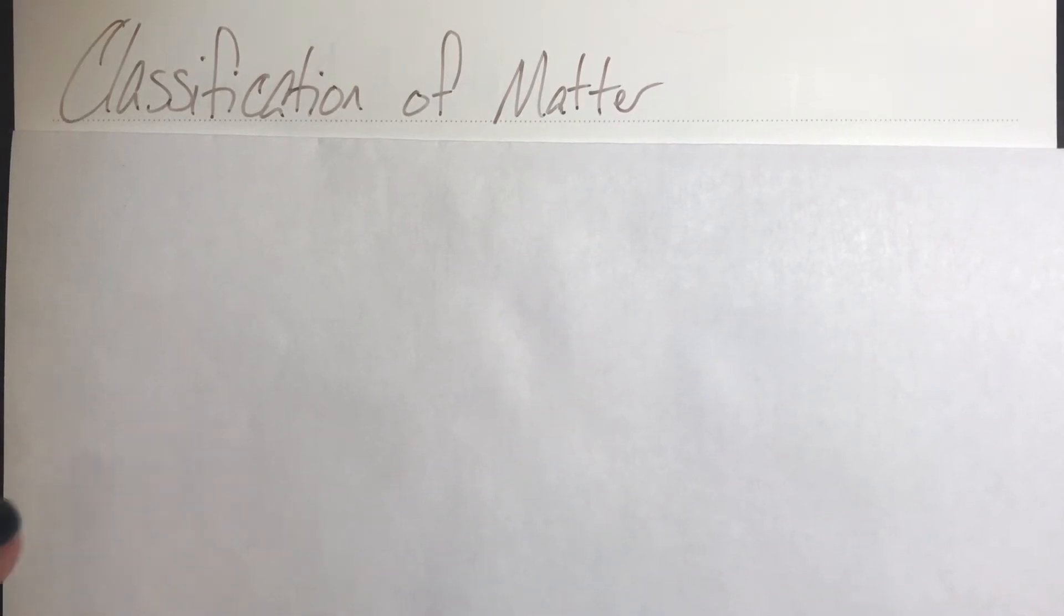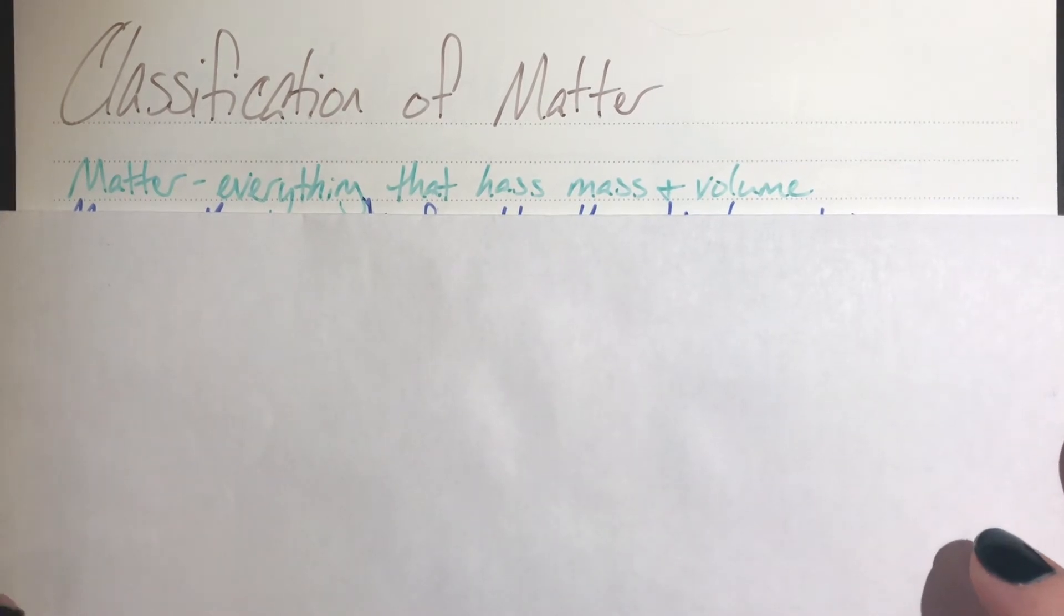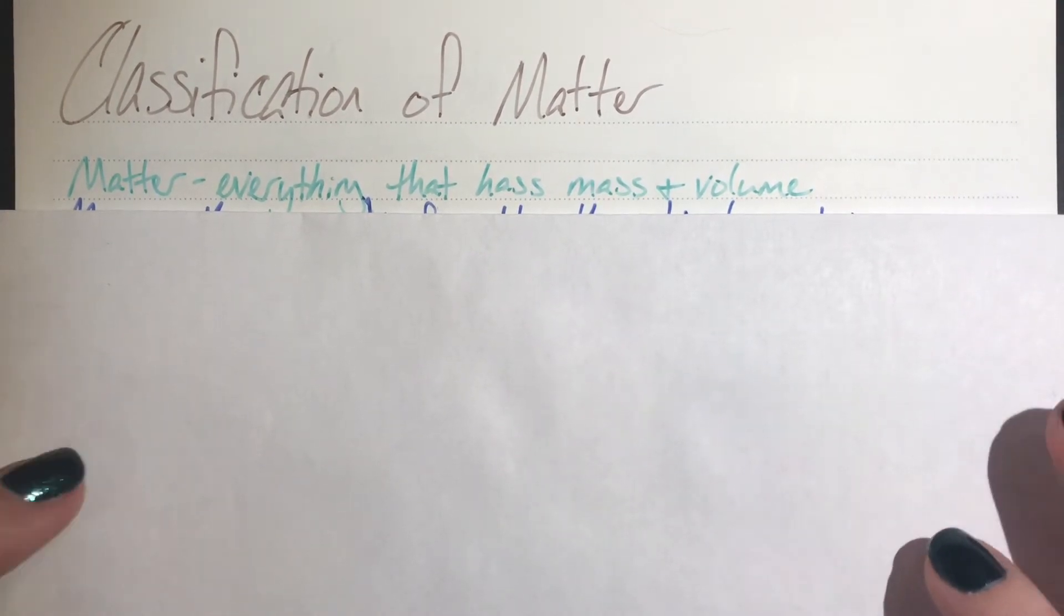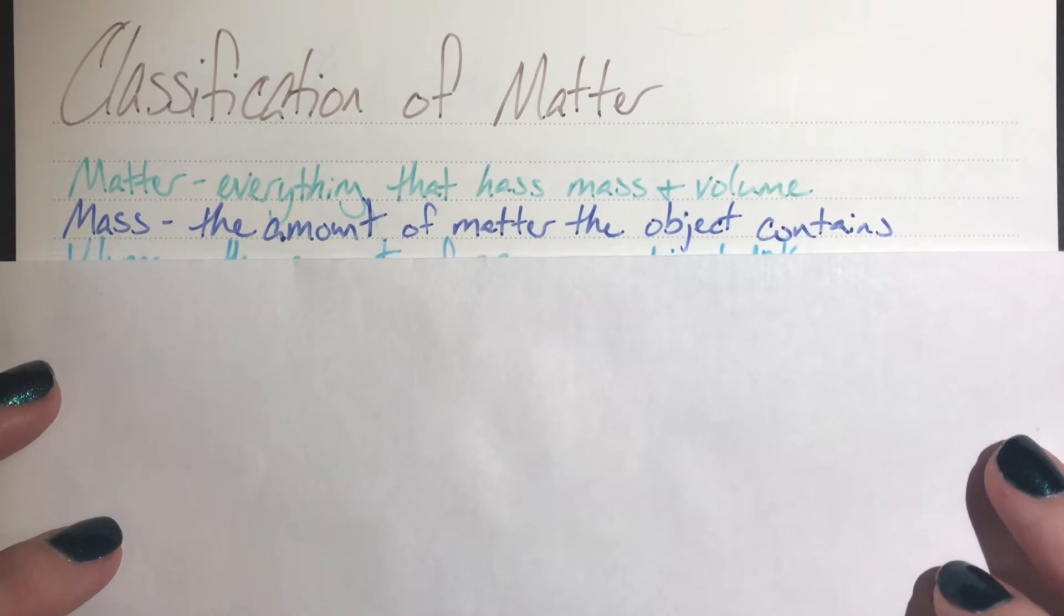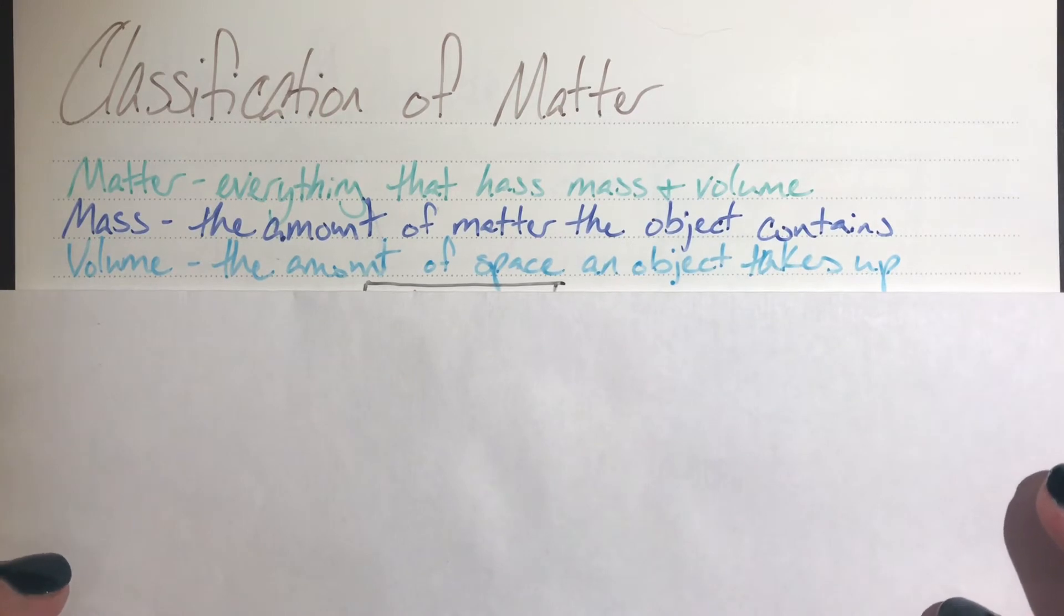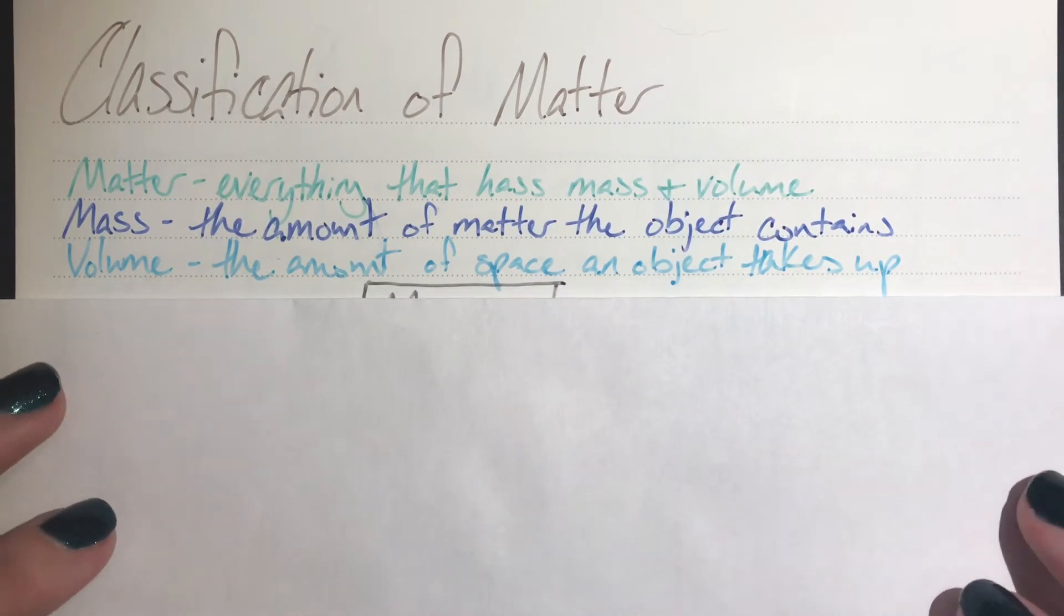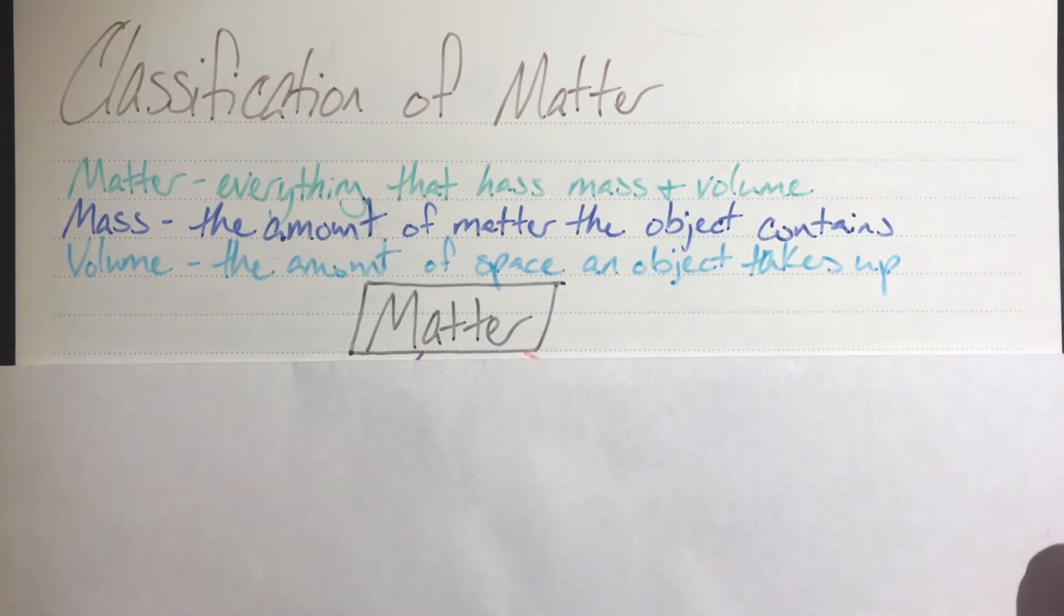Today we will be discussing the classification of matter. Matter is everything that has mass and volume. Mass is the amount of matter that the object actually contains, whereas volume is the amount of space that an object takes up. So if you have mass and you take up space, you matter.